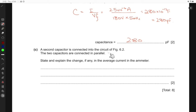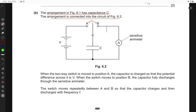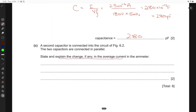The next part says the second capacitor is connected into the circuit, and the two capacitors are connected in parallel. So if you connect another capacitor, it would look something like this in parallel to this capacitor. Now, they're saying state and explain the change, if any, in the average current on the ammeter.